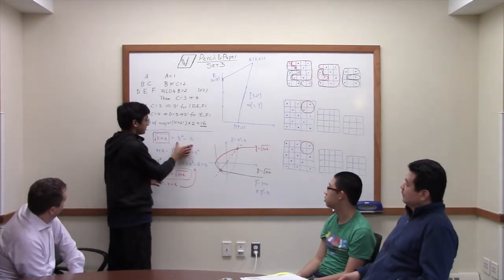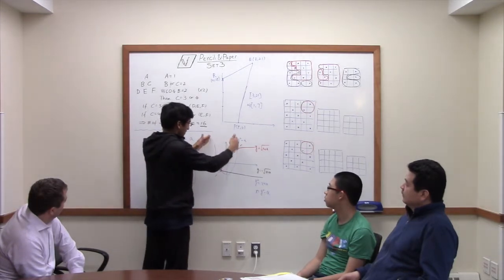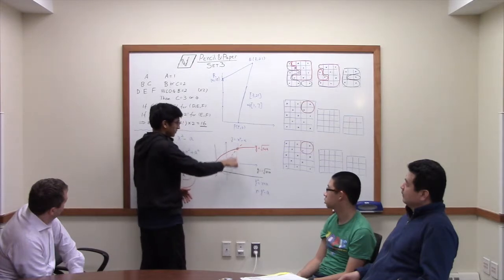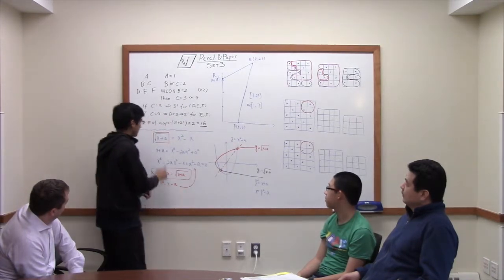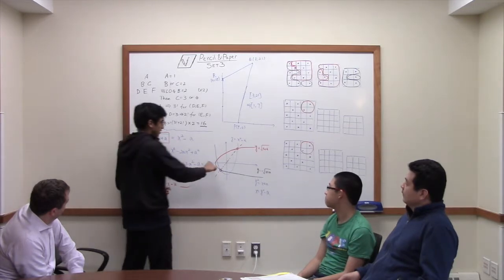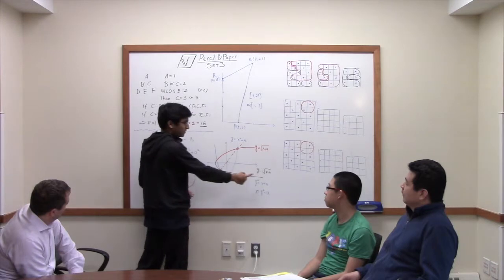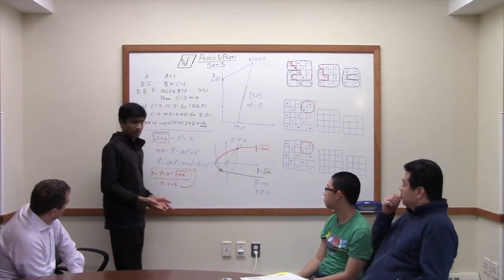If we look at the graph of x squared minus a, this is a parabola. It's just y equals x squared, and we shift it down by a. So that's this blue parabola here. And then if you look at the graph of the square root of x plus a, that is this half of the parabola. So the other half is negative to that, because the square root is always positive, right?